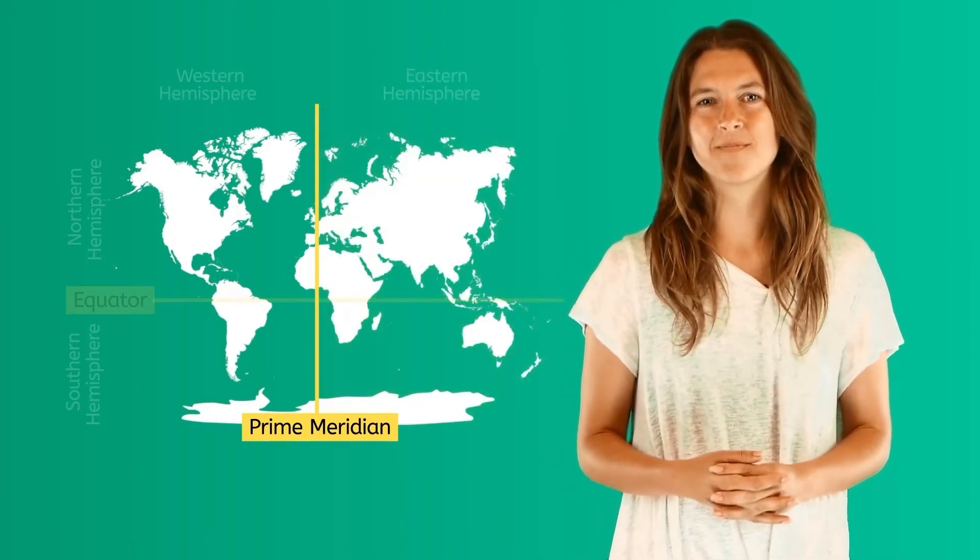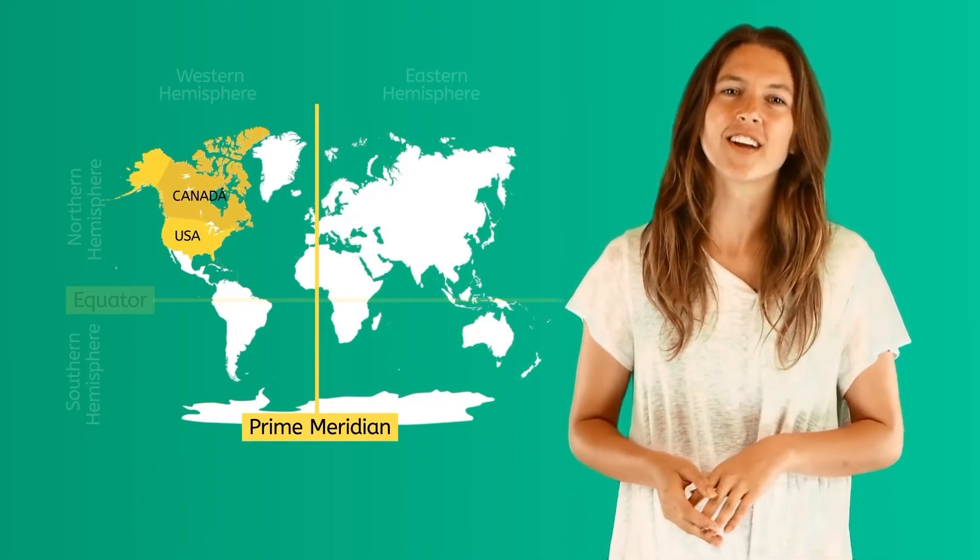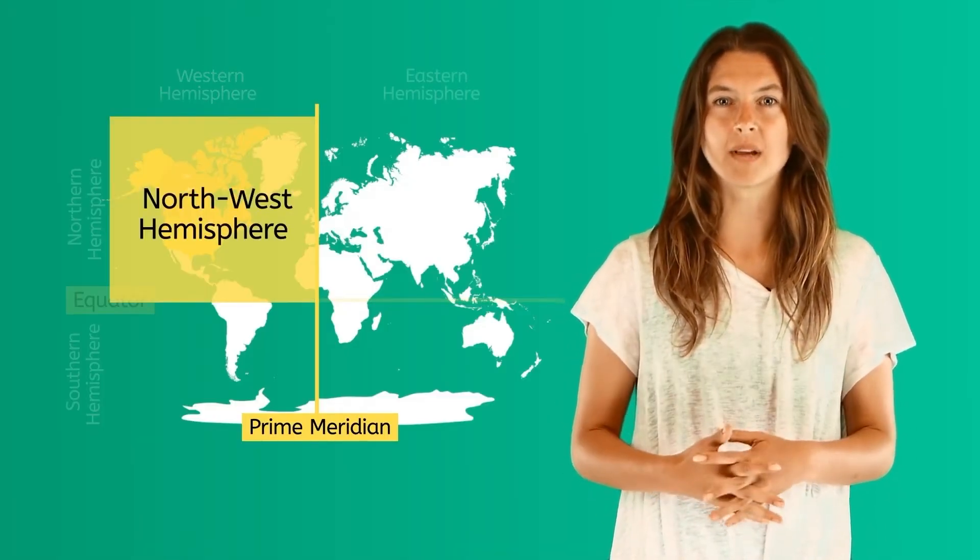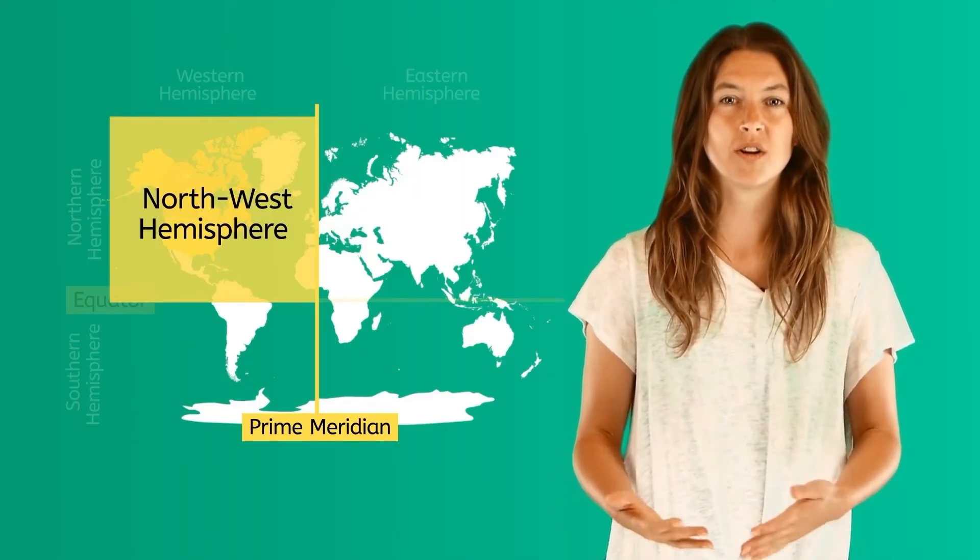So that means that continents and countries located to the east of the Prime Meridian are in the Eastern Hemisphere. Super! The USA and Canada are located in the Western Hemisphere. Actually, we say they're in the Northwest hemisphere because they're in both hemispheres. Cool, huh?